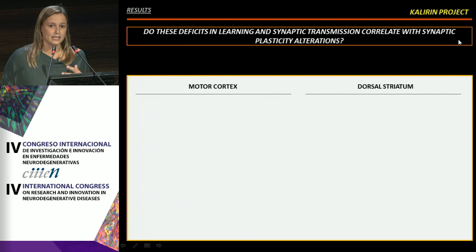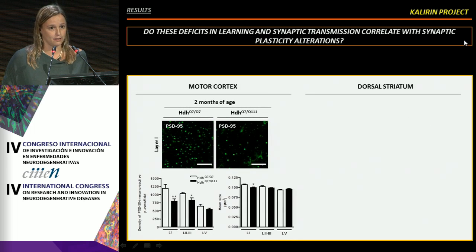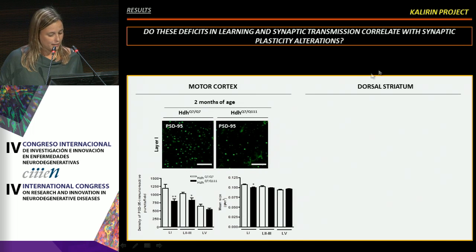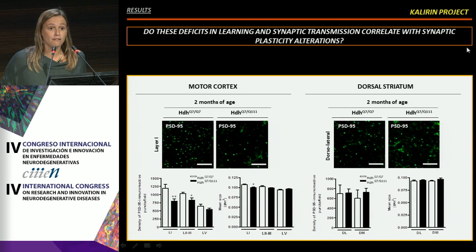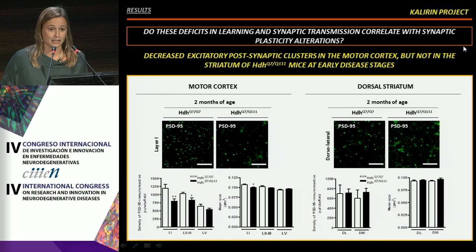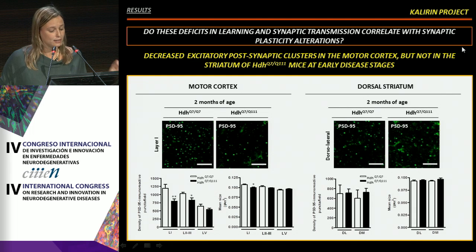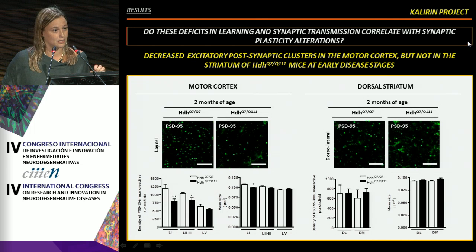To corroborate this data, we also performed immunostaining analyses. One marker we used was PSD95, an excitatory post-synaptic marker. We found that in different layers of the motor cortex, knock-in animals exhibit a significant decrease in the density of PSD95 immunoreactive puncta. Again, no significant changes were found in the dorsal striatum, indicating that the decrease in dendritic spine density was accompanied by a decrease in excitatory post-synaptic clusters in the motor cortex, but not in the striatum at early disease stages.